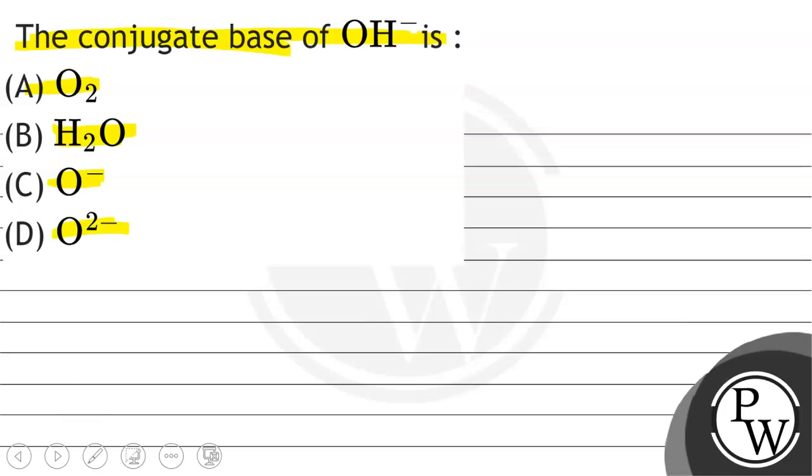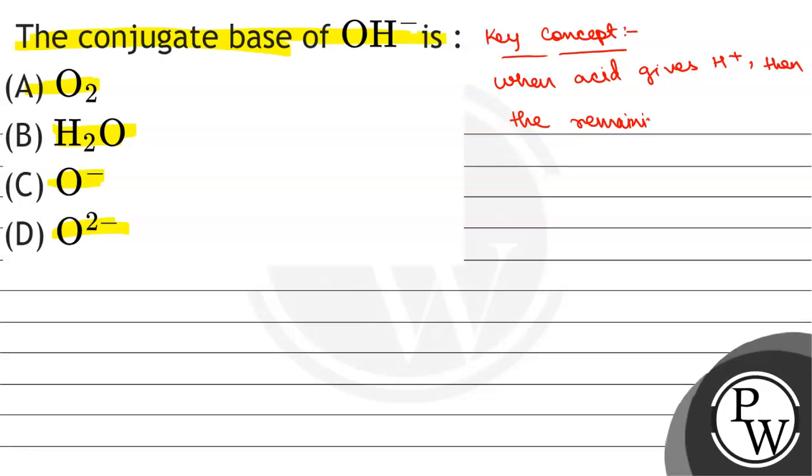So, we will solve this question. First of all, we will see what the key concept is. The key concept is: when acid gives H⁺, then the remaining part is called conjugate base.